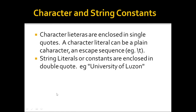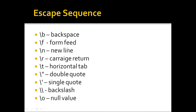Character literals are enclosed in single quotes. A character literal can be a plain character or an escape sequence. String literals or constants are enclosed in double quotes — for example, "University of Luzon". Common escape sequences include: \b for backspace, \f for form feed, \n for new line, \t for horizontal tab, \r for carriage return, \" for double quote, \' for single quote, \\ for backslash, and \0 for null value.